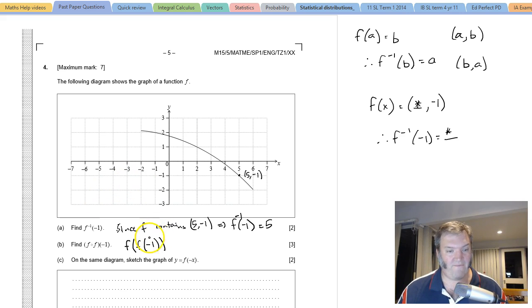f of f of negative 1: well, f(-1) is 2, so that's the same as f(2). What is f(2)? It maps onto a y coordinate of 1. So we've got f(f(-1)) equaling 1. Double check it: f(-1) maps onto 2, then 2 maps onto 1.